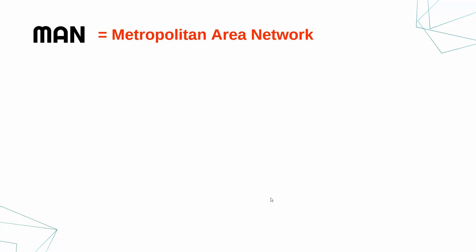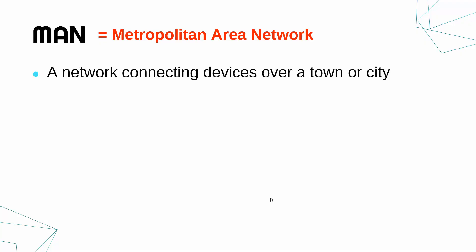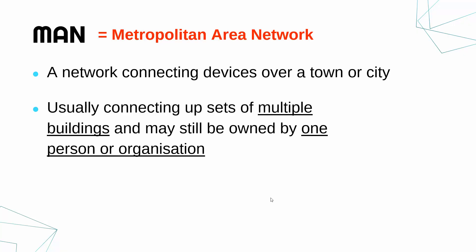The next type — we're getting progressively bigger — is a MAN. It's a slightly silly acronym, but it does stand for Metropolitan Area Network. 'Metropolitan', especially if you live in London — Metropolitan Police, Metropolitan Line — is all about cities. So a MAN, or M-A-N if you want to sound less silly, is a network connecting devices over a town or city. We're not talking about countries or continents — it's relatively small in the general scheme of things.